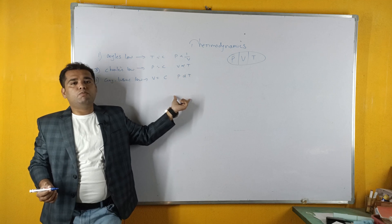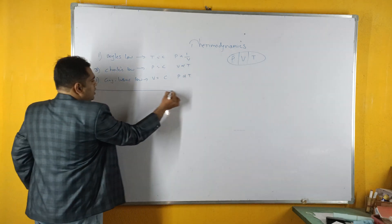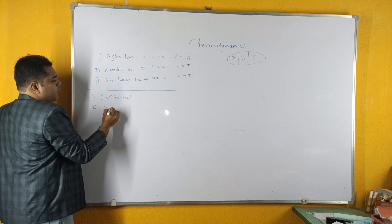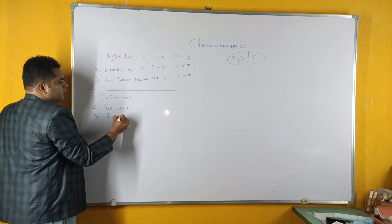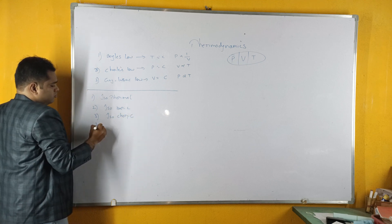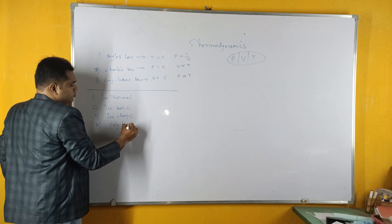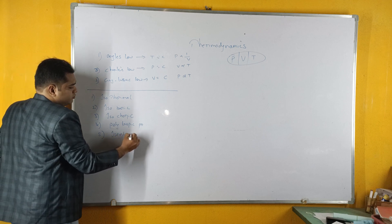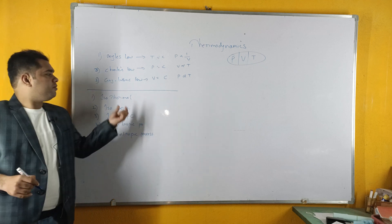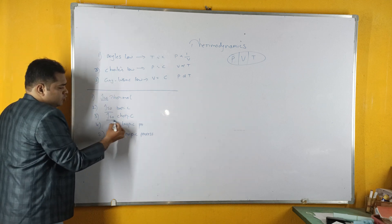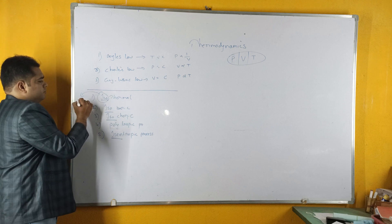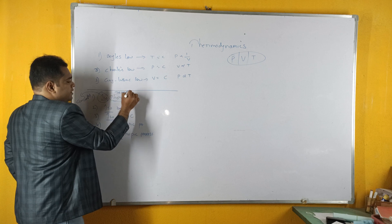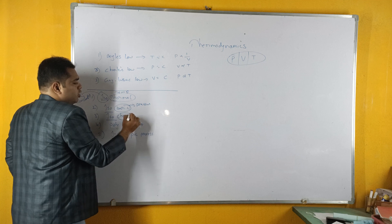Now we will discuss thermodynamic processes. The basic five thermodynamic processes are: isothermal process, isobaric process, isochoric process, polytropic process, and isentropic process. The prefix 'iso' means constant. So isothermal means constant temperature; 'thermal' means temperature. 'Baric' means pressure, and 'choric' means volume.